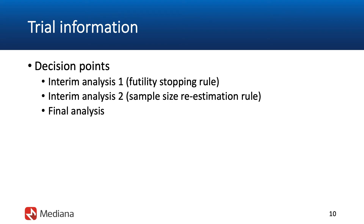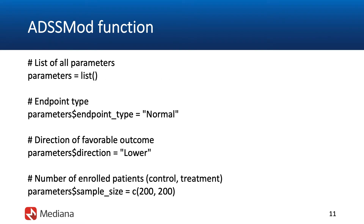We will define an interval called the underpowered interval. If conditional power happens to be within that interval, a decision will be made to enroll additional patients into the trial — to increase the total sample size — with the ultimate goal of improving the probability of success. The last decision point will be the final assessment. We will use the ADSSMOD function for simulation-based assessments of this adaptive design, which supports both futility assessment at the first interim analysis and sample size re-estimation.